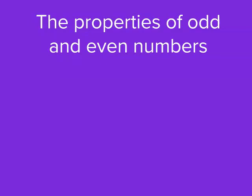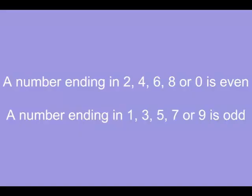There are some special things about odd and even numbers. We know from our previous investigation that even numbers can be divided by 2 with no remainders, and odd numbers can't. And we found that numbers ending in 2, 4, 6, 8 or 0 are even, and numbers ending in 1, 3, 5, 7 and 9 are odd.